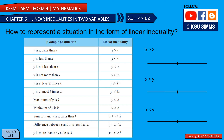So how do we represent a situation in the form of linear inequalities? We have a lot of examples. Here I have a number line with the number 3. Going right we have 4, 5, continuing to positive infinity, and going left we have 2, 1, 0, negative 1, continuing to negative infinity.